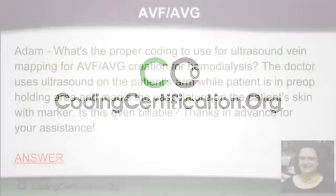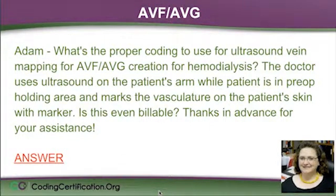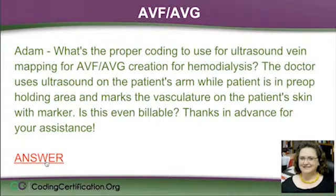What's the proper coding to use for ultrasound vein mapping for AVF and AVG creation for hemodialysis? The doctor uses ultrasound on the patient's arm while the patient is in the pre-op holding area and marks the vasculature on the patient's skin with a marker. Is this even billable? Thanks in advance for your assistance.